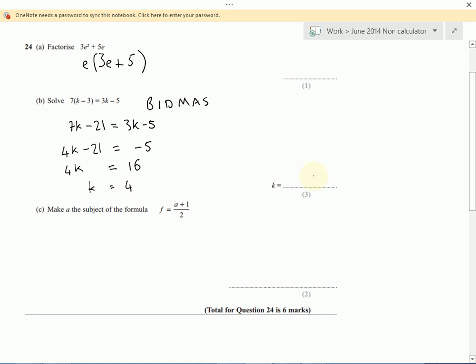So your answer k is 4. One more to go. We've got an expression here, a formula for f. We're not interested in f. We want to find out what a is. We don't care what f and a are. We just want to be able to move around this equation.